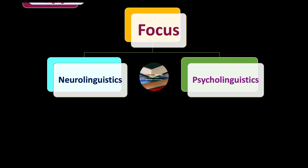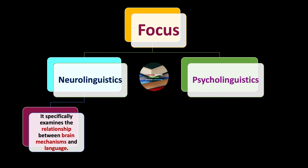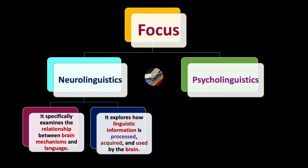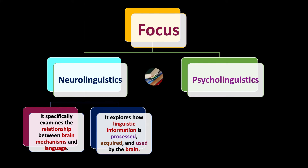Let's first talk about neurolinguistics. It specifically examines the relationship between brain mechanisms and language. It explores how linguistic information is processed, acquired, and used by the brain.